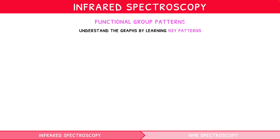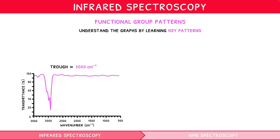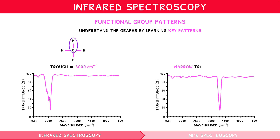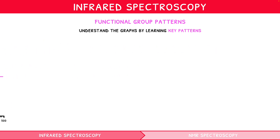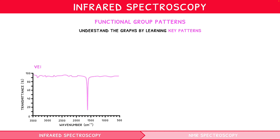The five patterns we recommend learning are: a trough centred around 3000 cm⁻¹ indicates an alkyl group (C–H); a narrow trough at 1700 cm⁻¹ indicates a carbonyl group (C=O); and a very narrow trough at 1600 cm⁻¹ indicates an alkene group (C=C).